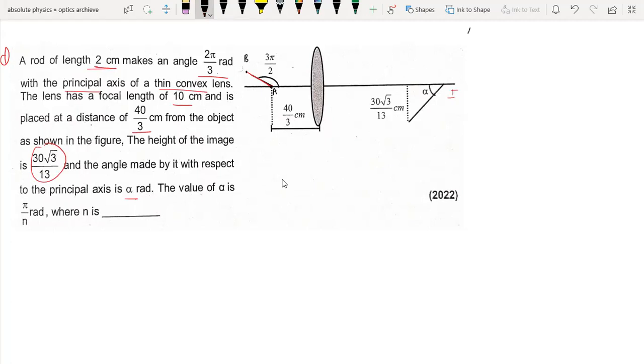So for end A, if we look, U is minus 40 by 3. The lens focal length F is 10 centimeters. Using the lens formula: 1 by V equals 1 by F plus 1 by U.